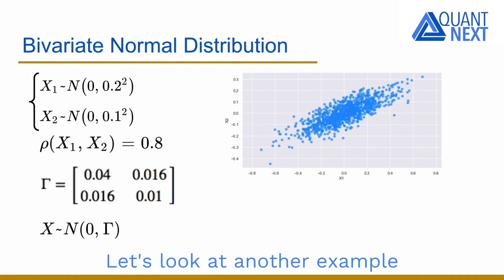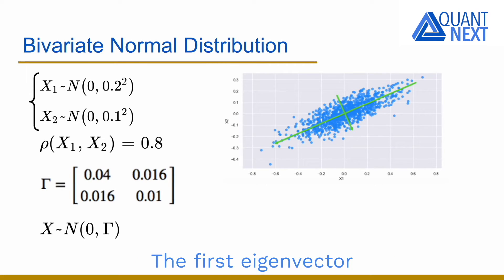Let's look at another example by considering two correlated Gaussian variables. x1 and x2 follows a Gaussian distribution with 0 mean, 0.2 and 0.1 standard deviations respectively. The two variables are correlated with a correlation of 80%. We simulate 1000 data points. The first eigenvector with the highest eigenvalue points in the direction of the greatest variation, while the second one is perpendicular.